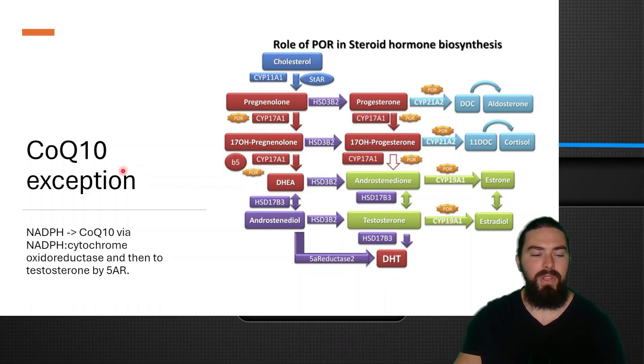So here, as I mentioned, is the coenzyme Q10 exception. As I mentioned, NADPH donates electrons to coenzyme Q10 via the NADPH cytochrome oxidoreductase and then testosterone to 5-alpha reductase.